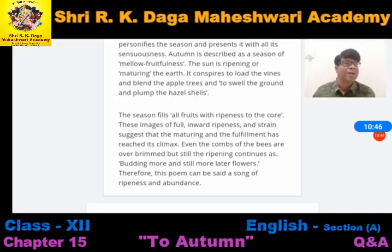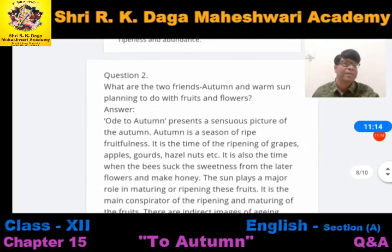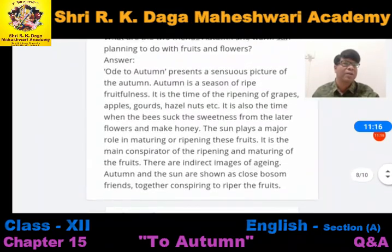Even the combs of the bees are overflowing — this is the point where maturing and fulfillment is at its peak. Budding more and still more, later flowers are now taking over the plants. Therefore this poem can be said to be a song of ripeness and abundance.